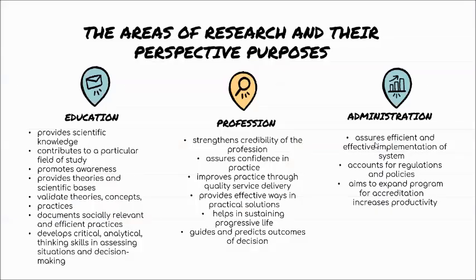The scope of research — we have three areas: education, profession, and administration. In education, research provides scientific knowledge, contributes to a particular field of study, promotes awareness, provides theories and scientific basis, validates theories, concepts, and practices, documents socially relevant and efficient practices, and develops critical analytical thinking skills in assessing situations and decision making. When you create a research, you learn a lot.